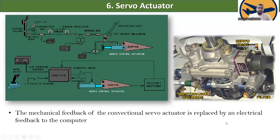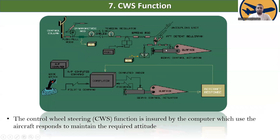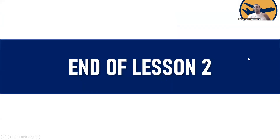Now the CWS — control wheel steering function. The CWS function is ensured by the computer, which uses the aircraft response to maintain the required altitude.